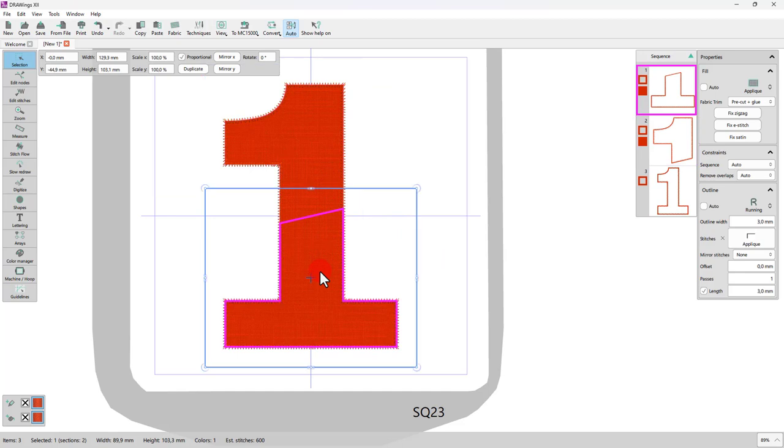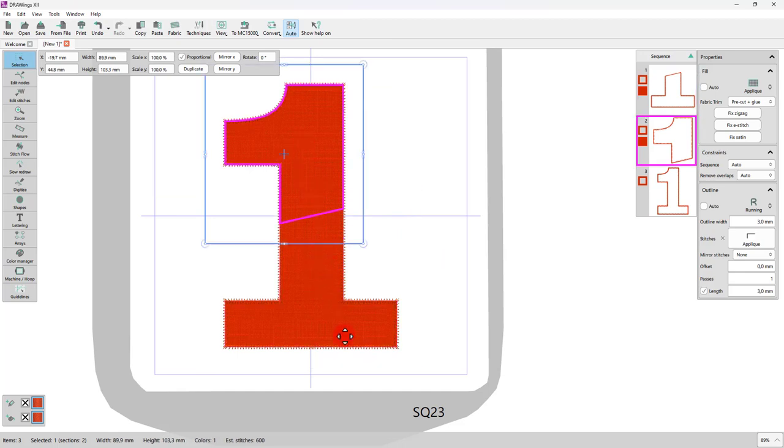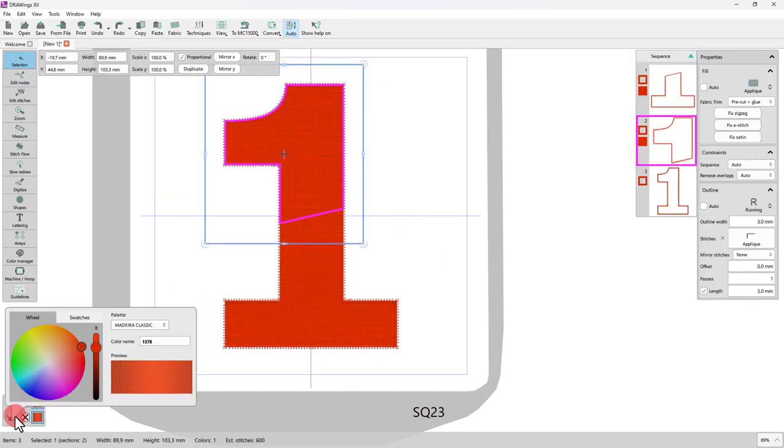Now, number one is split in two. We will set the color of the upper part as blue so that we have a visual idea of our final design.